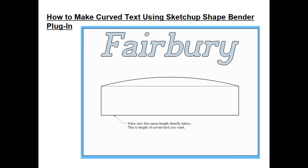For the plugin to work properly you need a straight horizontal line that's not connected to anything else. You also need a curve line — that's the line of curvature you want the text to follow. If you try connecting the straight line to the curve, or use a straight line under the curve that's connected to it, the program won't accept that line. You need a separate horizontal straight line the length you want the curved text to be, and then a separate curve line.